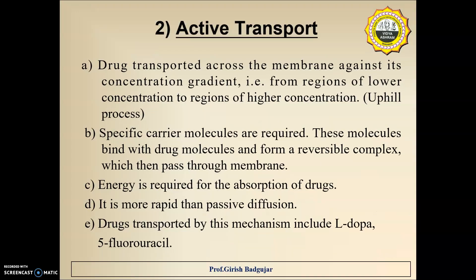In active transport, drugs are transported across the membrane against their concentration gradient, that is from regions of lower concentration to regions of higher concentration — so it is an uphill process. Specific carrier molecules are required; these molecules bind with drug molecules to form a reversible complex, which then passes through the membrane and releases the drug on the other side. Energy is required, and because carrier molecules are used, this process is more rapid than passive diffusion. Some drugs transported by this mechanism include levodopa and 5-fluorouracil.